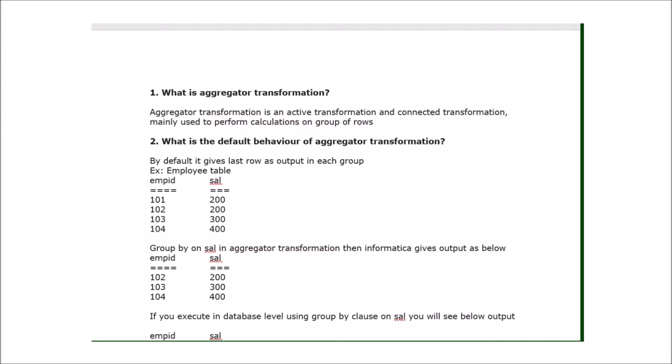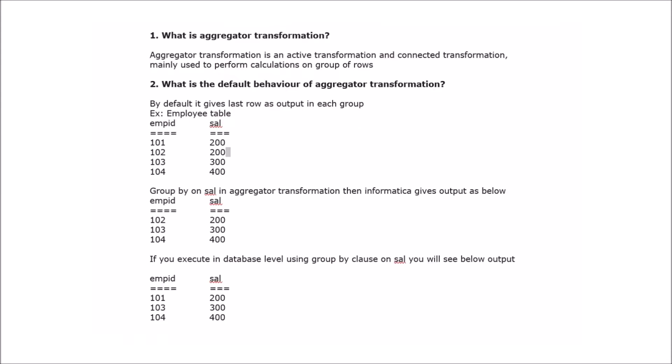The second question is: what is the default behavior of aggregator transformation? By default, aggregator transformation returns the last row as output in each group.